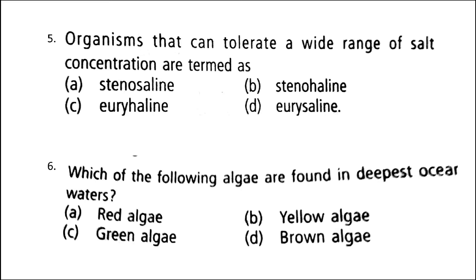Next: organisms that can tolerate a wide range of salt concentration are termed as — the correct answer is option C: Euryhaline. Euryhaline organisms are able to tolerate a wide range of salt concentrations or salinities, e.g., Poecilia sphenops, a fish that can live in fresh water, brackish water, or salt water.